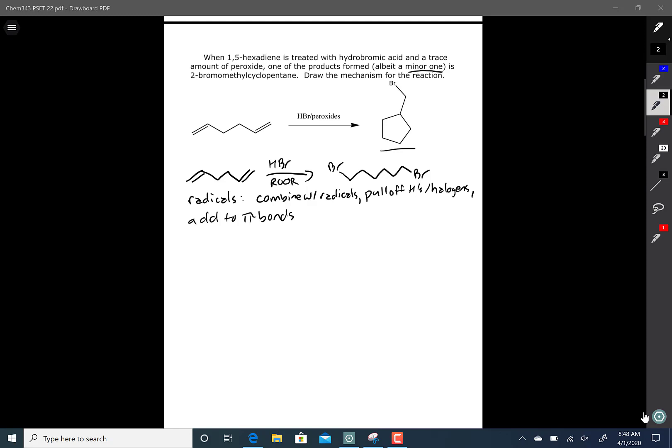So start out the mechanism just like you would a normal mechanism. Starts out by the peroxide splitting in two. And then this peroxide grabs an H from HBr.